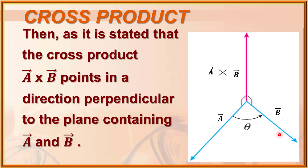The resultant vector a cross b is perpendicular to the plane containing vectors a and b. For example, if vectors a and b are in the xy-plane, then the resultant vector a cross b must be in the z-direction. The resultant must be perpendicular to the plane containing both vectors being multiplied.